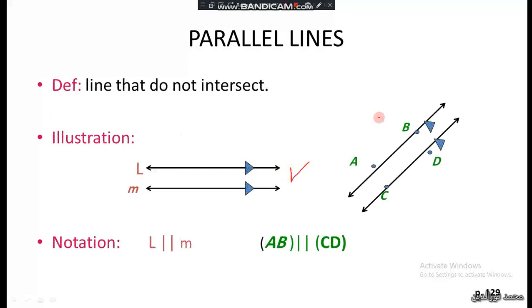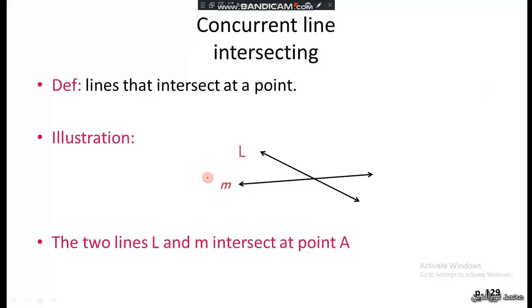Illustrations—the notation: we can say the line M is parallel to line N. The notation for parallel lines. Concurrent or intersecting lines—as we see here, there is a point of intersection. These lines are intersecting at a point A. There is one point of intersection in this case.